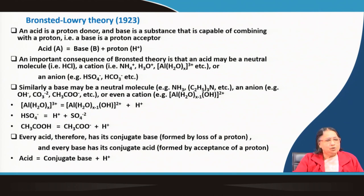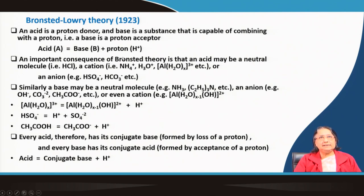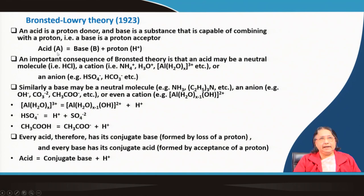Every theory has some limitations, but at the time it could explain the properties of acids and bases nicely in other solvents, though not in water. Now comes the Bronsted-Lowry theory, stated in 1923, that an acid is a proton donor and a base is a substance capable of combining with a proton. Here it is not said that a base gives OH⁻; instead, a base is something which can take up a proton. This is more general and can explain many things beyond the Arrhenius and Franklin concepts.